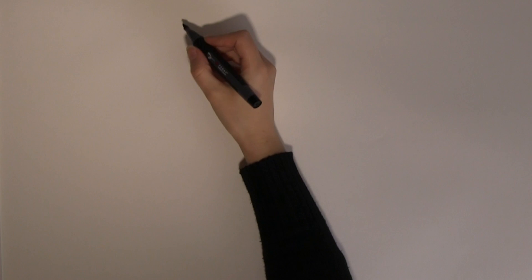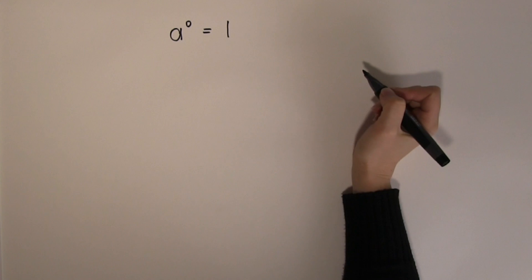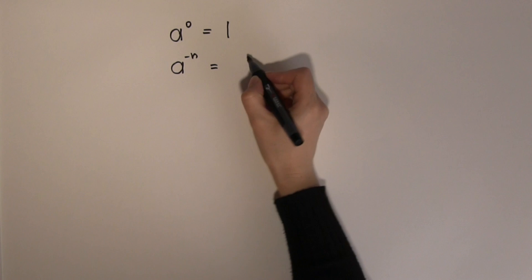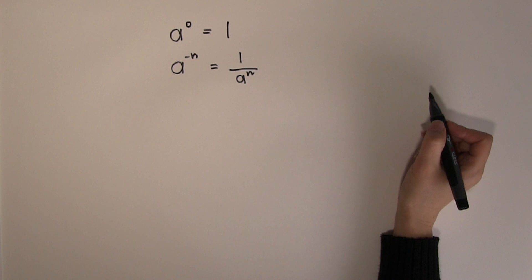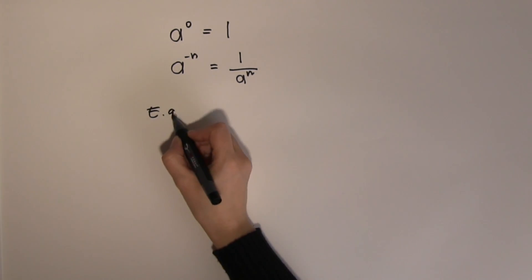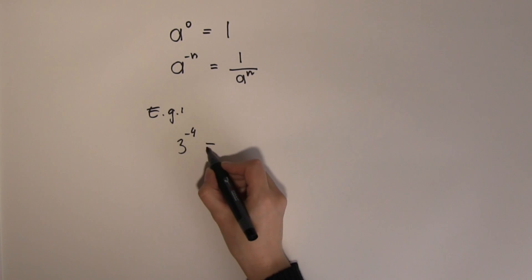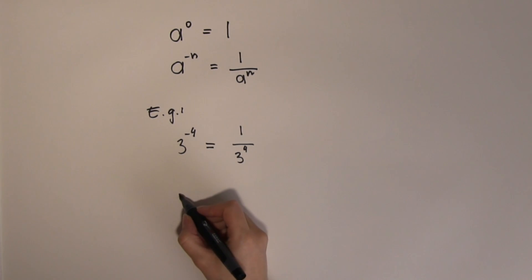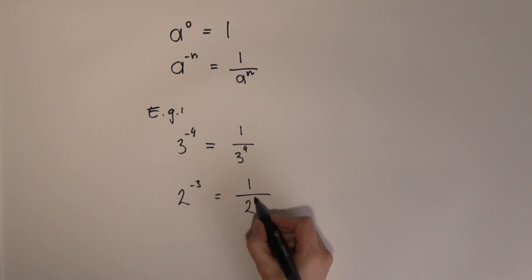Let's extend or recap our knowledge about powers. Any number to the zero power is always one by definition. Negative powers are the same as one over the positive equivalent — so three to the minus four is one over three to the four, and two to the minus three is one over two to the three.